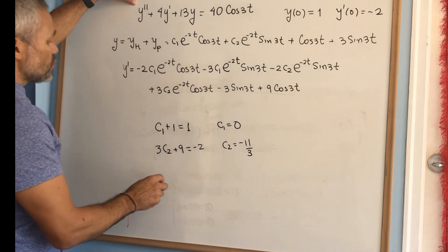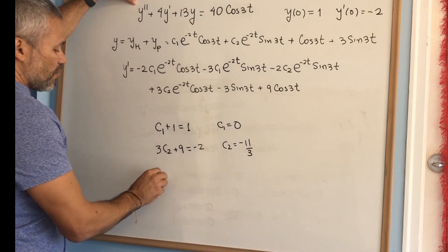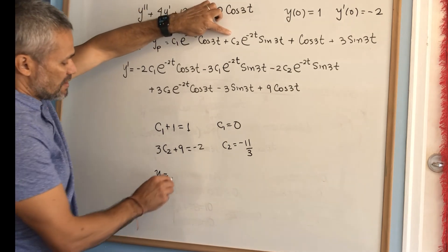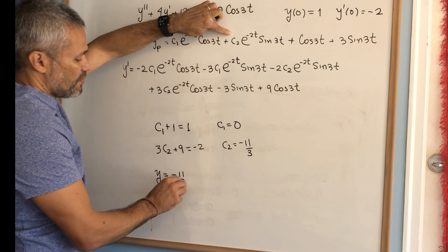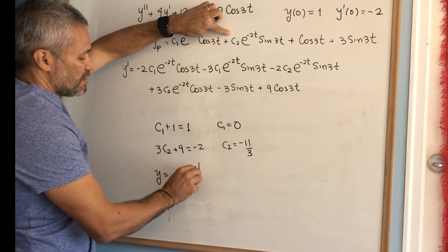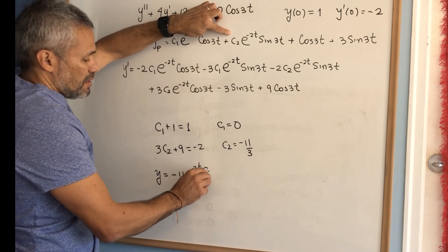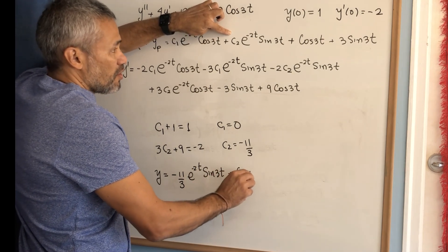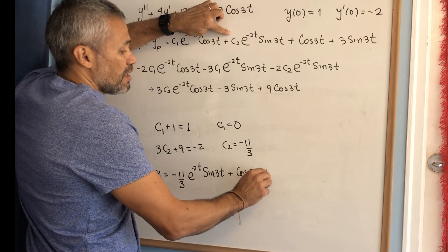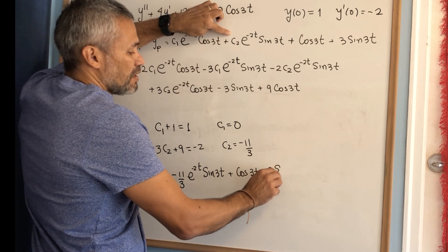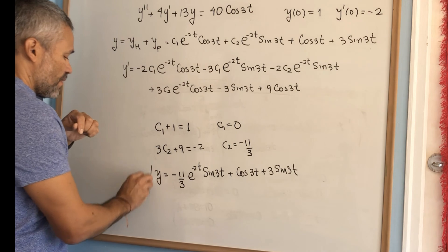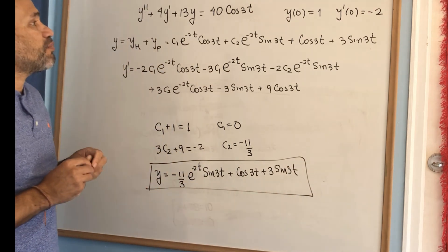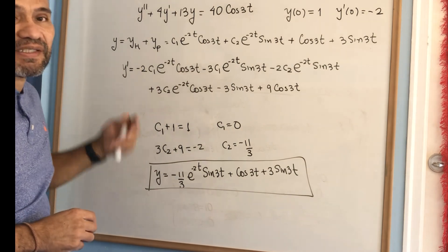Therefore, the solution of the initial value problem is: y = (−11/3)·e^(−2t)·sin(3t) + cos(3t) + 3·sin(3t). This is the solution of the initial value problem.